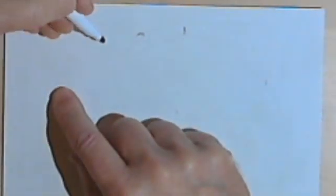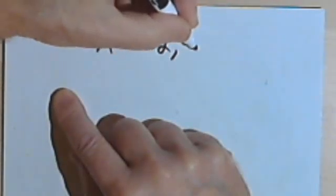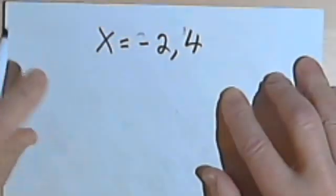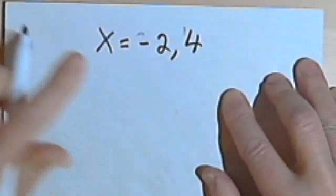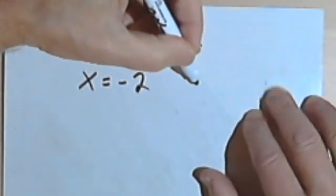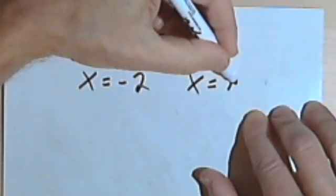Let's say you're told that there's a quadratic equation and the roots, or the solution, is going to be x equals negative 2 and 4. Well, I could rewrite this as two equations, x equals negative 2 and x equals 4.